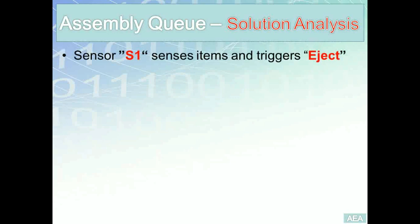In this problem, sensor S1 senses an item and triggers an eject solenoid. This requirement is a simple digital input / digital output requirement, very similar to the start-motor example.